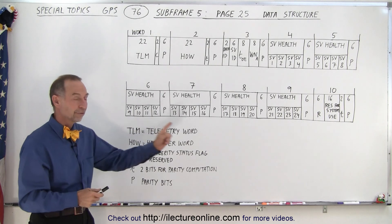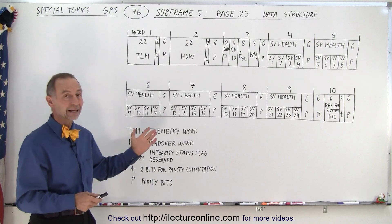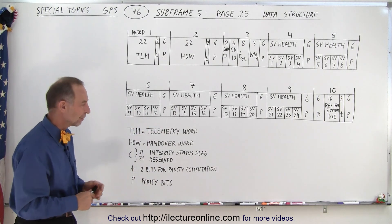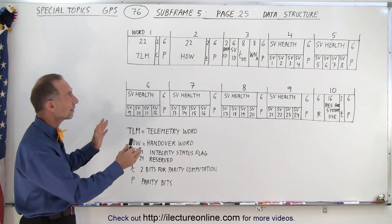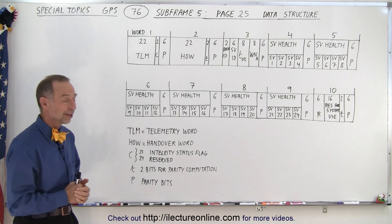Then of course, this is only for 24 satellites. We need to have that information for the other eight satellites, which is then contained somewhere else. And we'll find out where that's contained, but not in subframe 5. And that is how it's done.